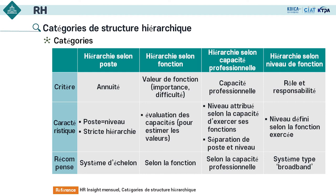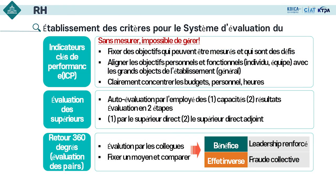Mais quand on établit un système de récompense, la valeur relative de chaque travail est une information très importante. Beaucoup d'institutions publiques adoptent la hiérarchie selon la fonction. Concernant les critères pour le système d'évaluation du personnel, nous les établissons en combinant trois facteurs : ICP (indicateurs clés de performance), l'évaluation des supérieurs et le retour à 360 degrés.